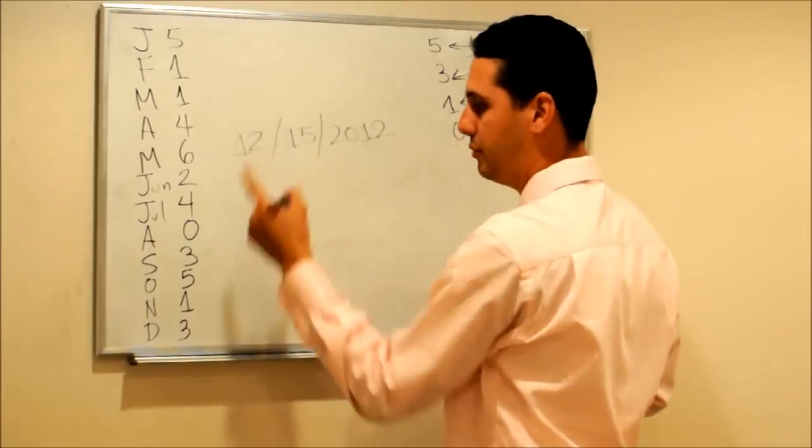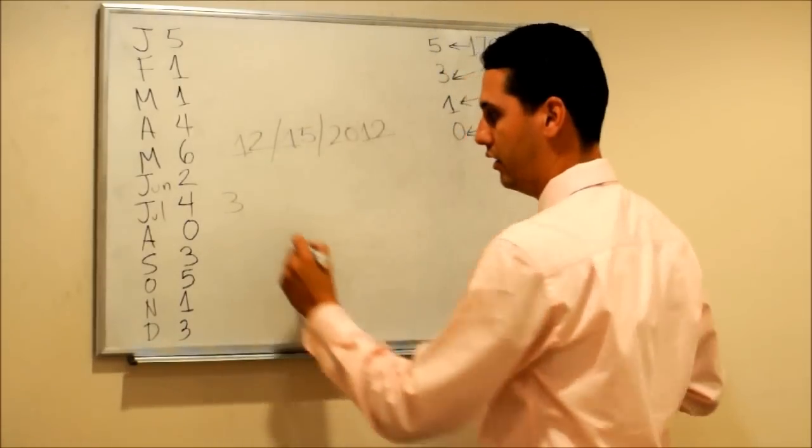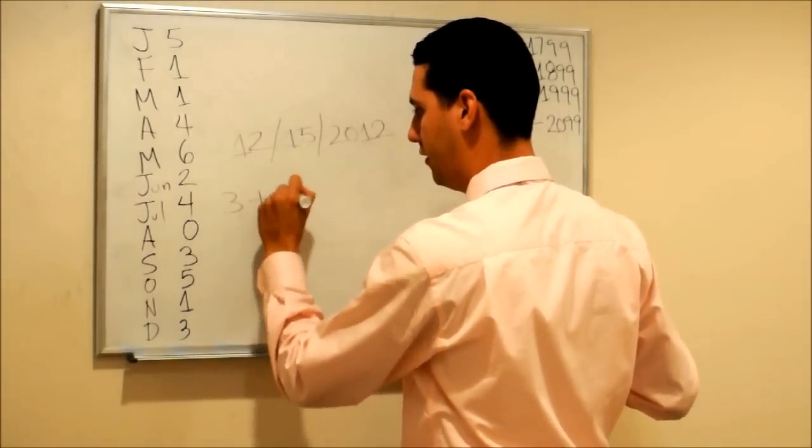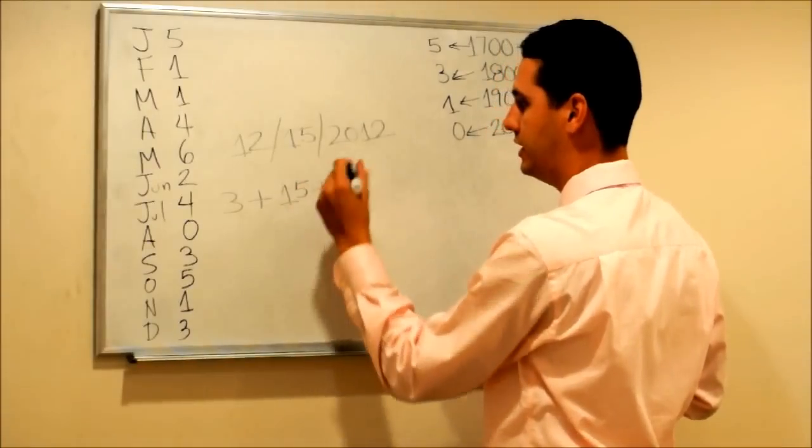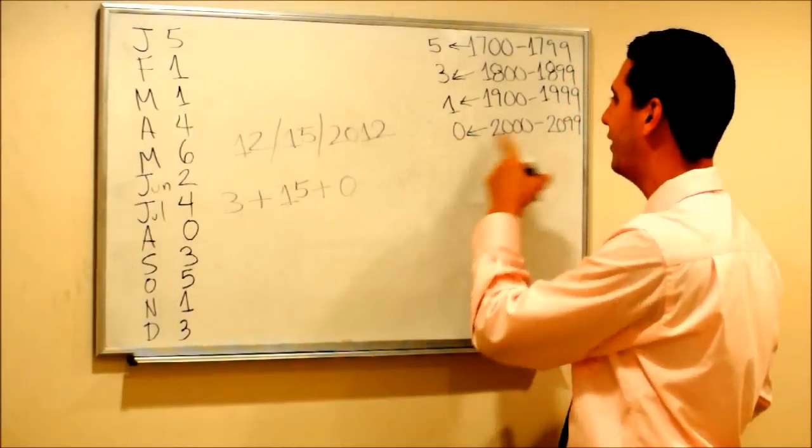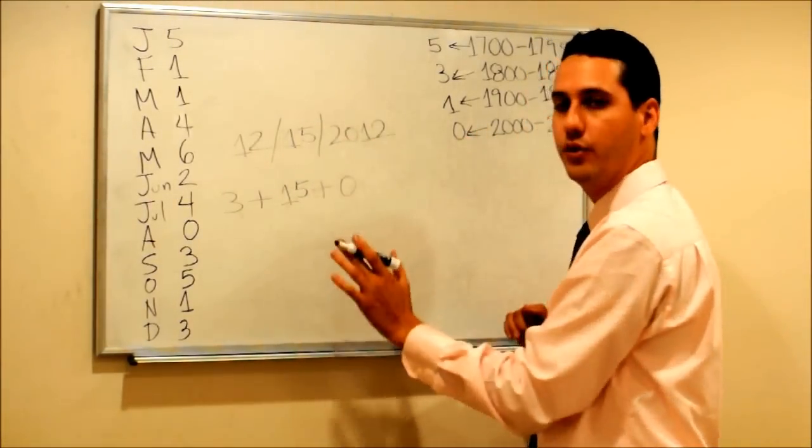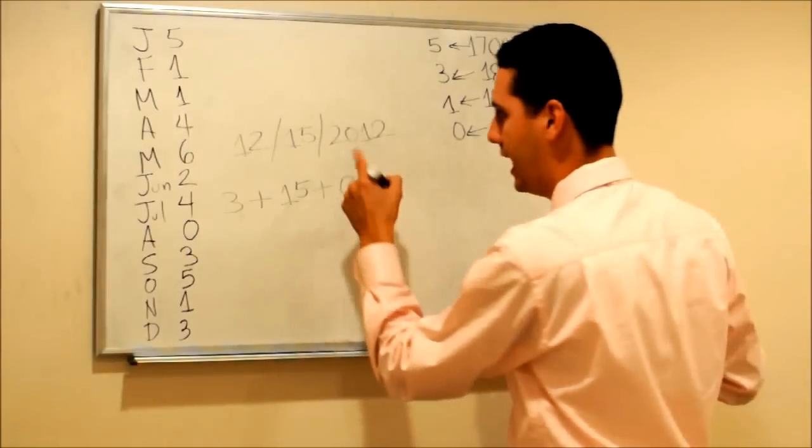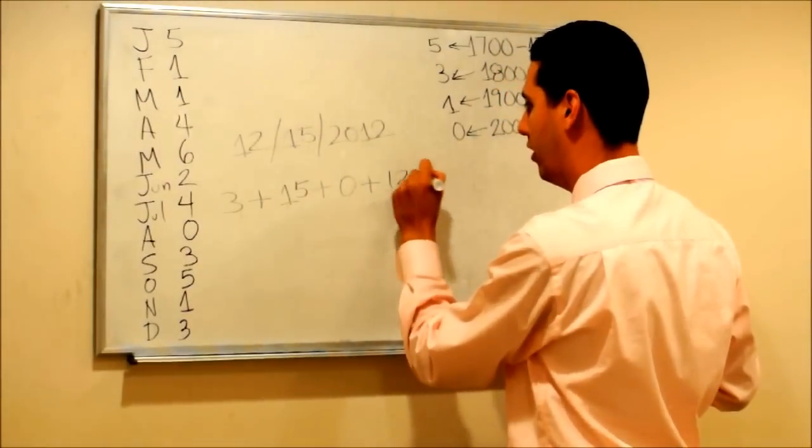For December, the number is 3, so we have 3 plus 15. In this case we have a date of the 21st century, so we don't have to add anything. Let's put the 0 just to show you. Now the 12: we want to write 12 plus 12 divided by 4.